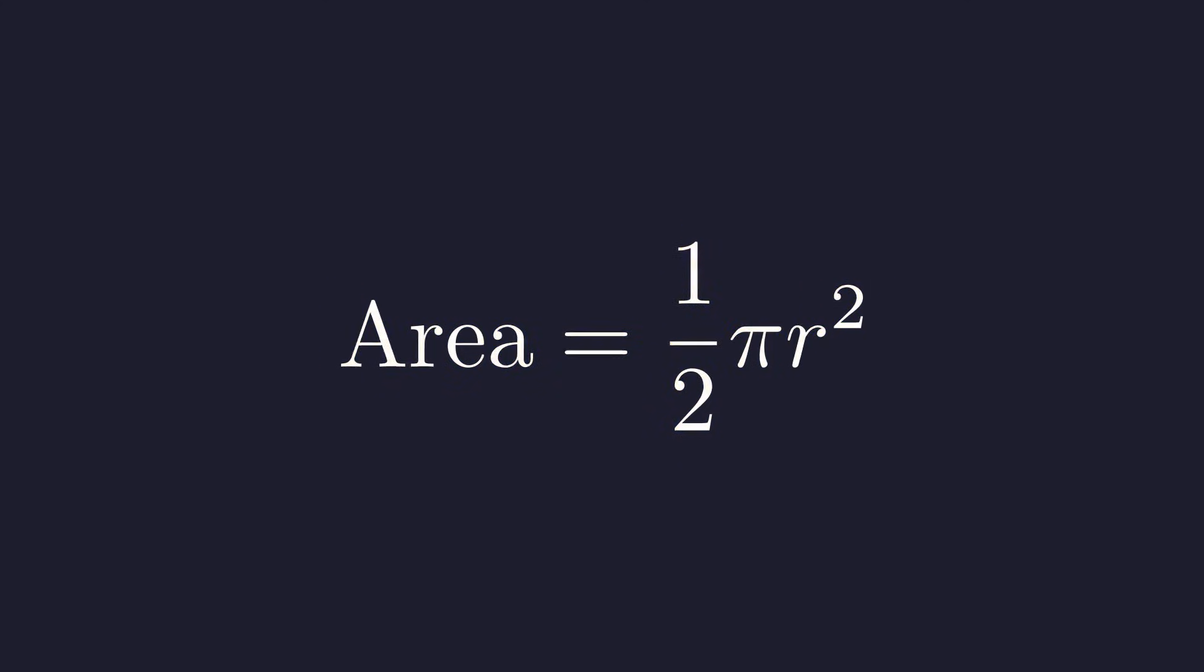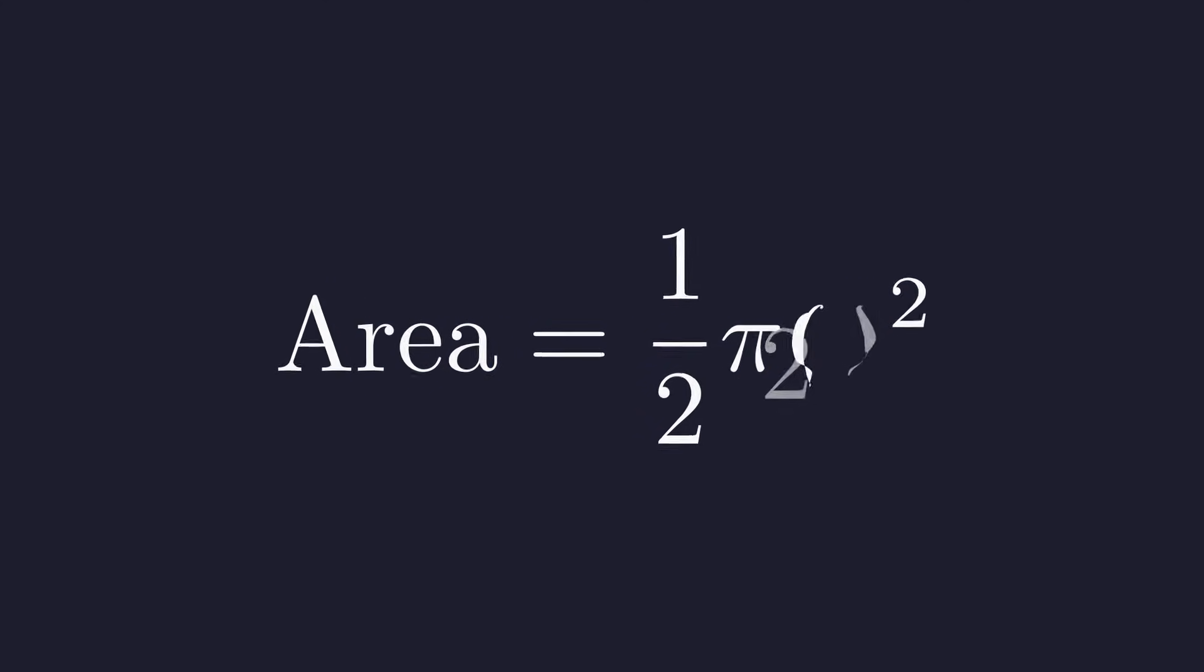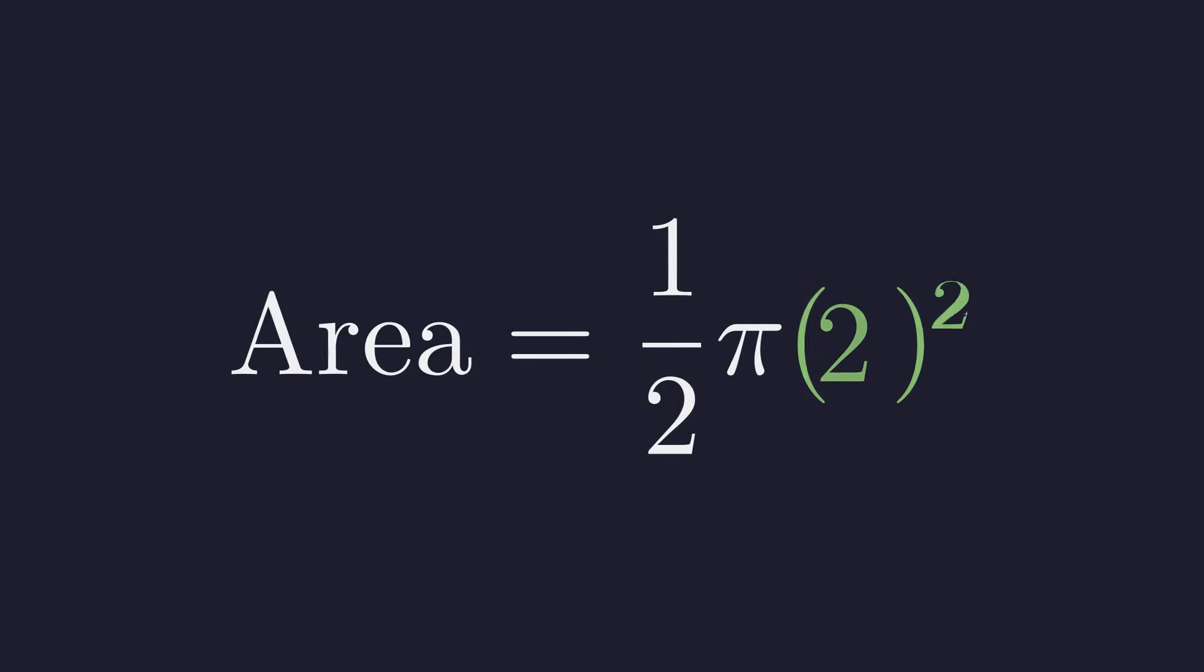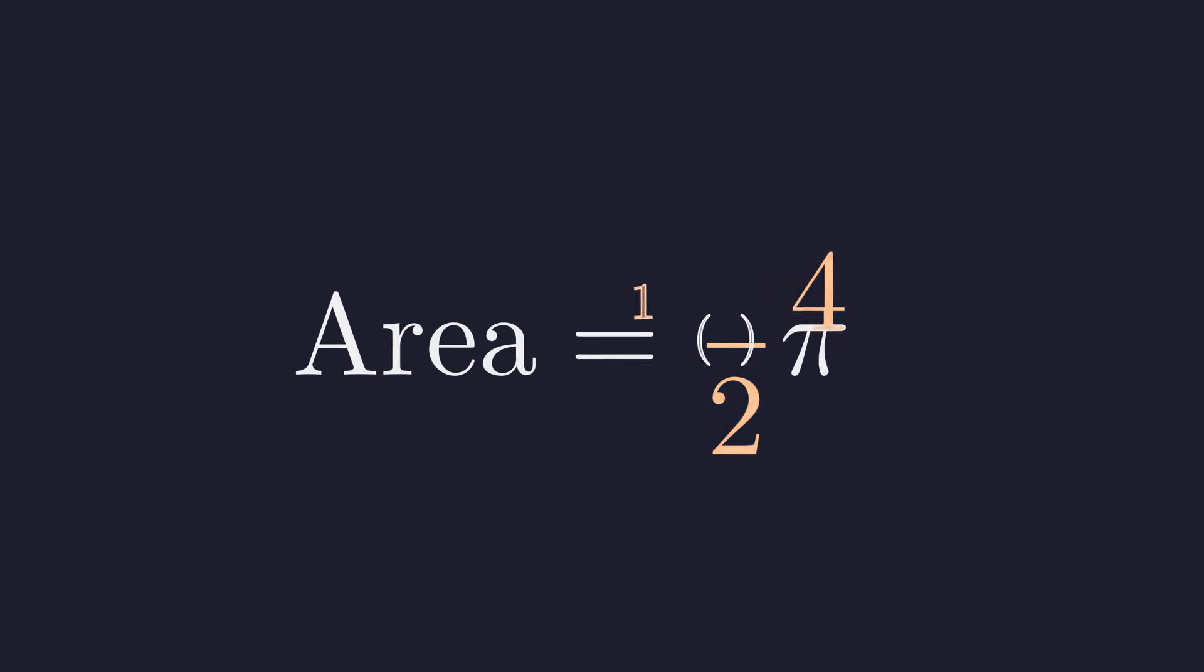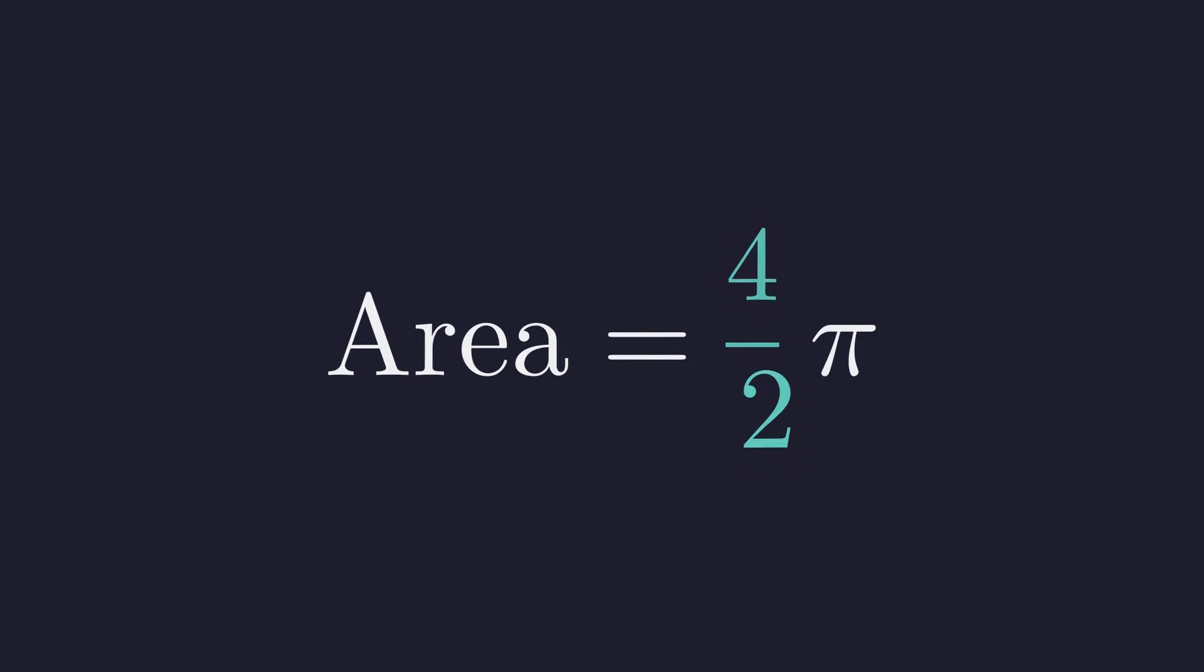We know the radius r is 2. Plug in 2. 2 squared. That's 4. 1 half times 4. That gives us 4 halves pi. Simplify. And we get 2 pi.